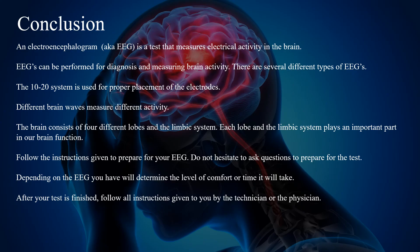In summary, an electroencephalogram, also known as an EEG, is a test that measures electrical activity in the brain. EEGs can be performed for diagnosis and measuring brain activity, and there are several types. The 10-20 system is used for proper placement of electrodes, and different brain waves measure different activity. The brain consists of four lobes and the limbic system, each playing an important part in brain function. Follow the instructions given to prepare for your EEG, and do not hesitate to ask questions. Depending on the EEG, the level of comfort or time required will vary. After your test, follow all instructions given by the technician or physician.